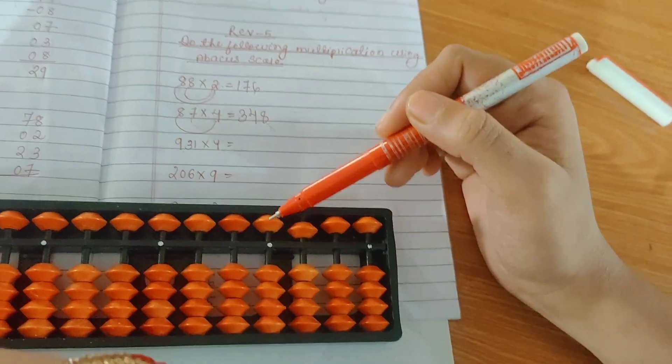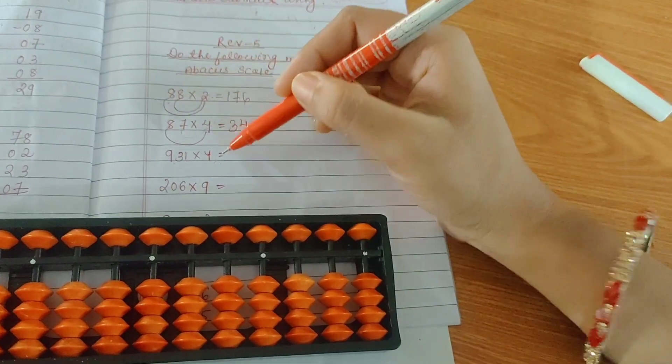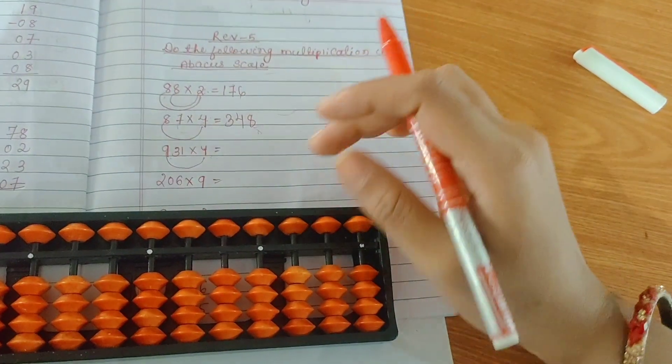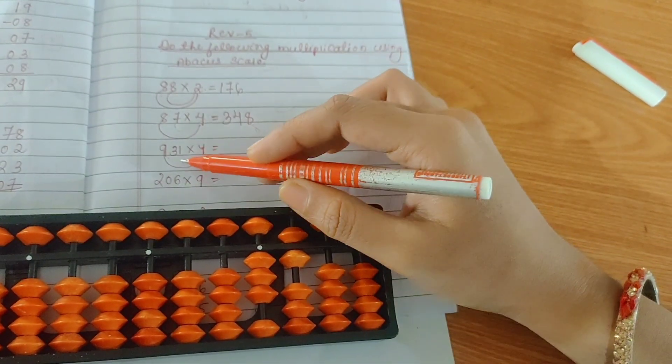1, 2, 3, 4. From the fourth row you will start the answer. First, multiply 4 with 9. 4 times 9 is 36. 4 times 3 is 12.